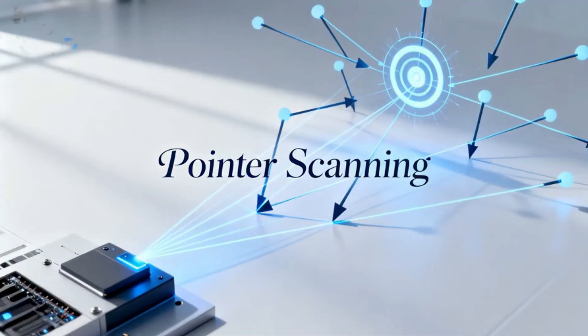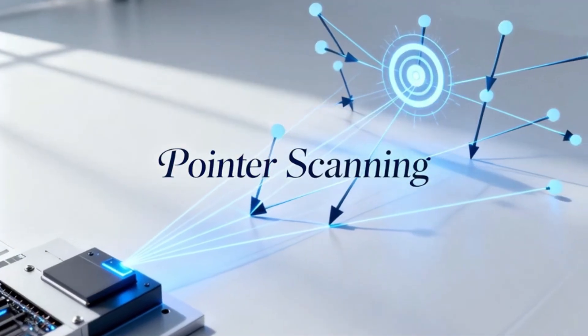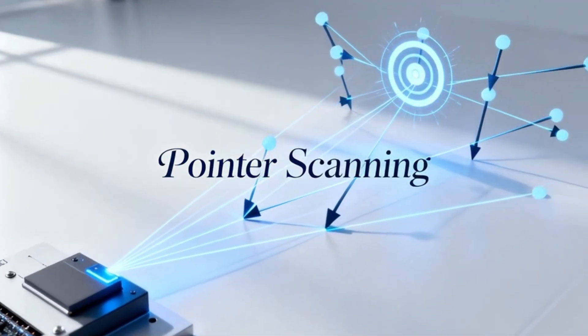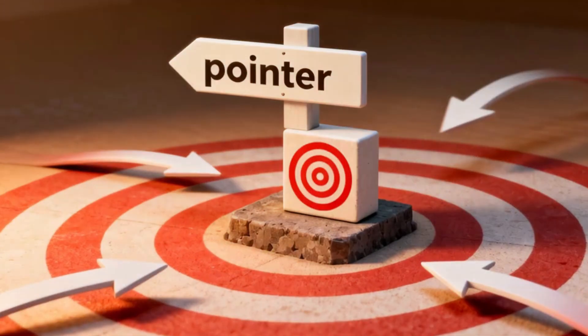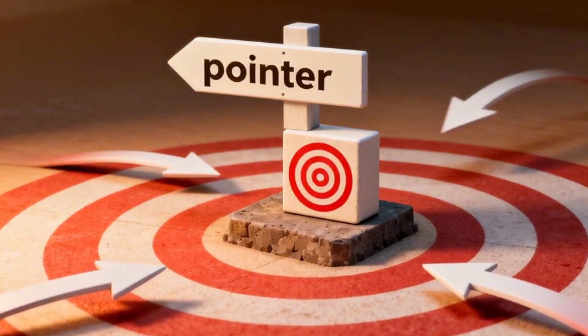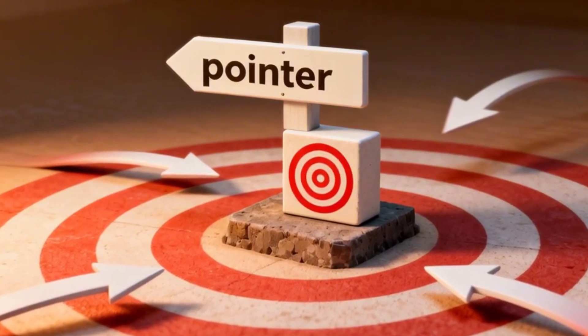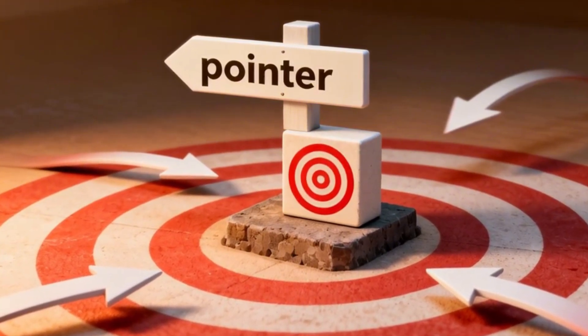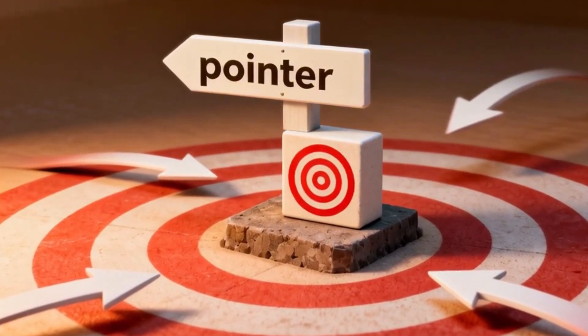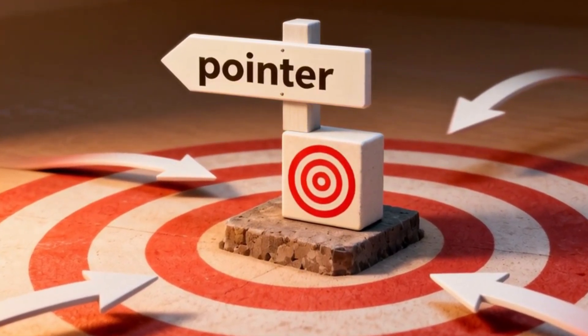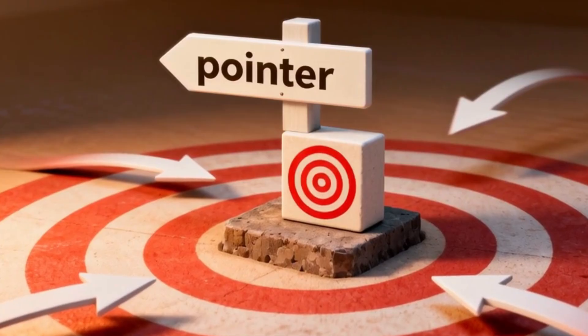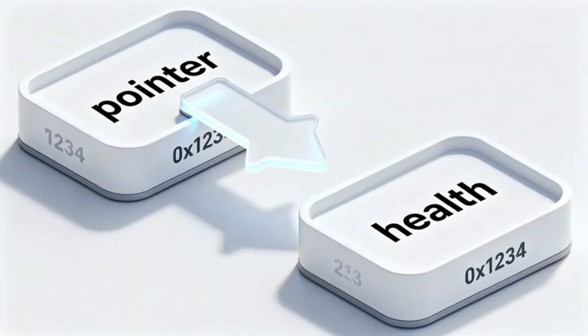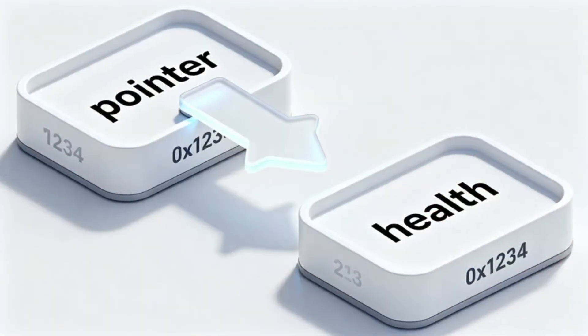Searching for the value every time is tedious. This is where a more advanced technique called pointer scanning comes in. Think of it like this: while the address of your health value is dynamic and changes every time, the game needs a reliable way to find it. It often uses something called a pointer.